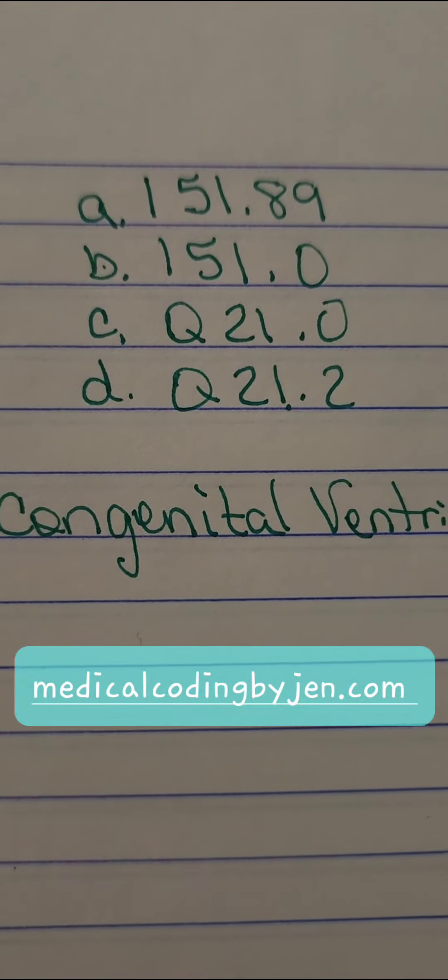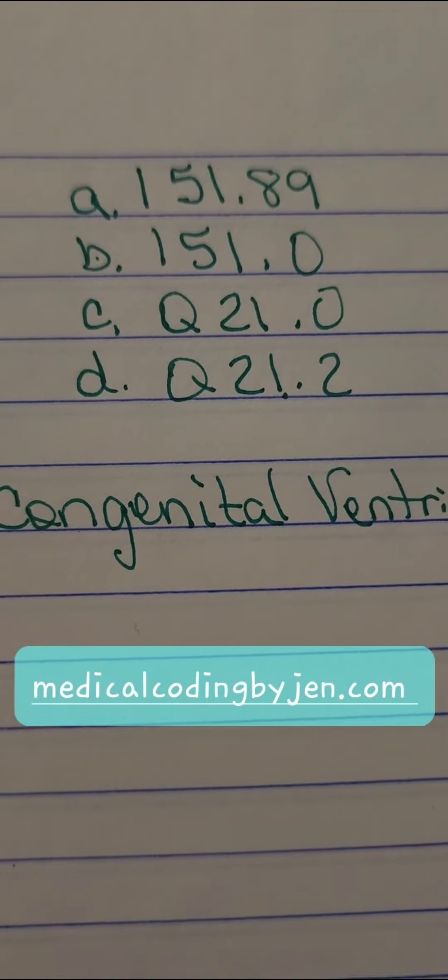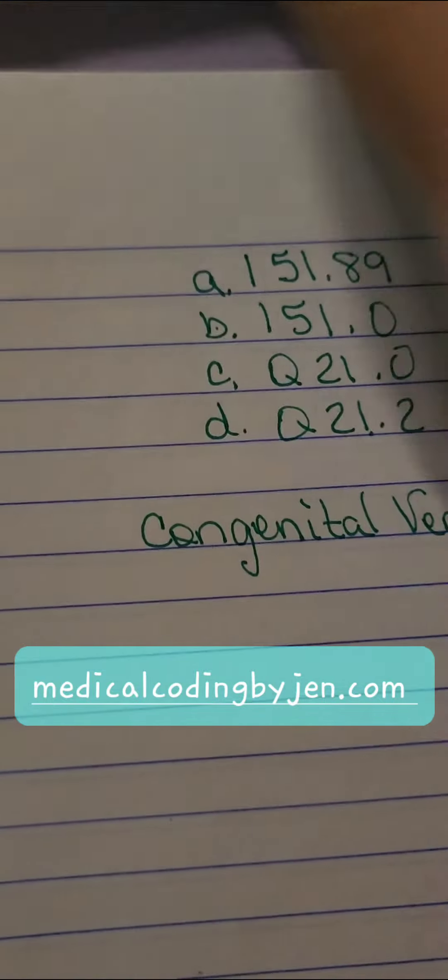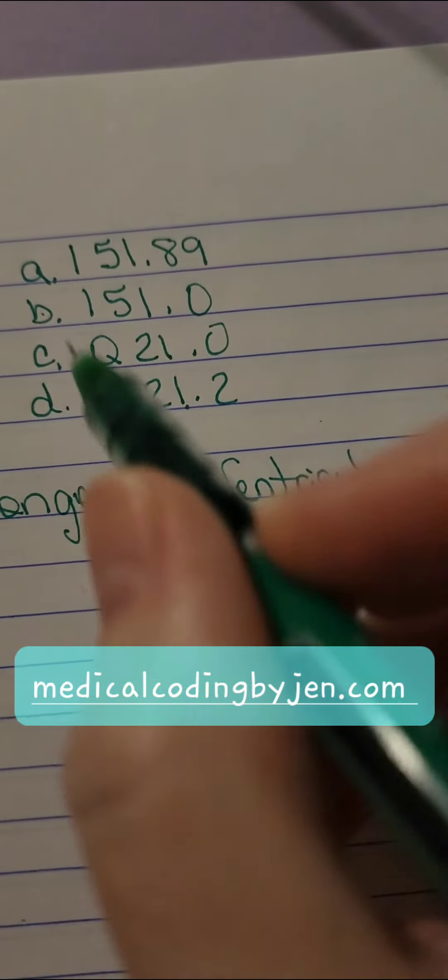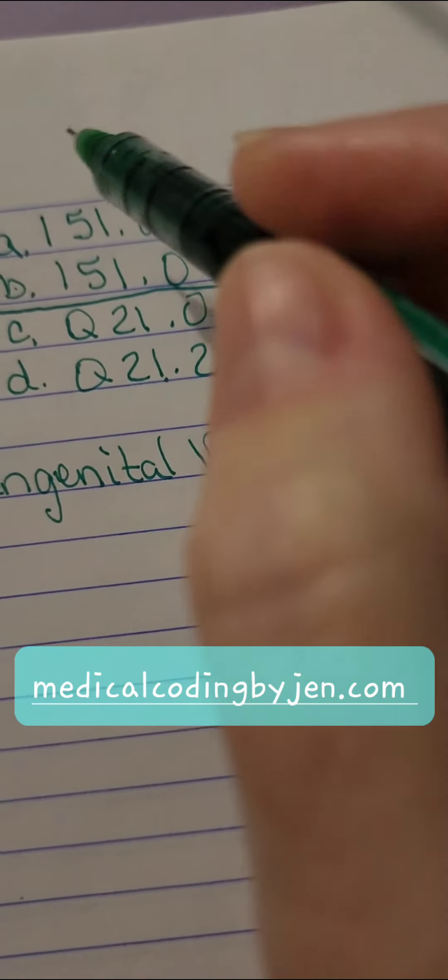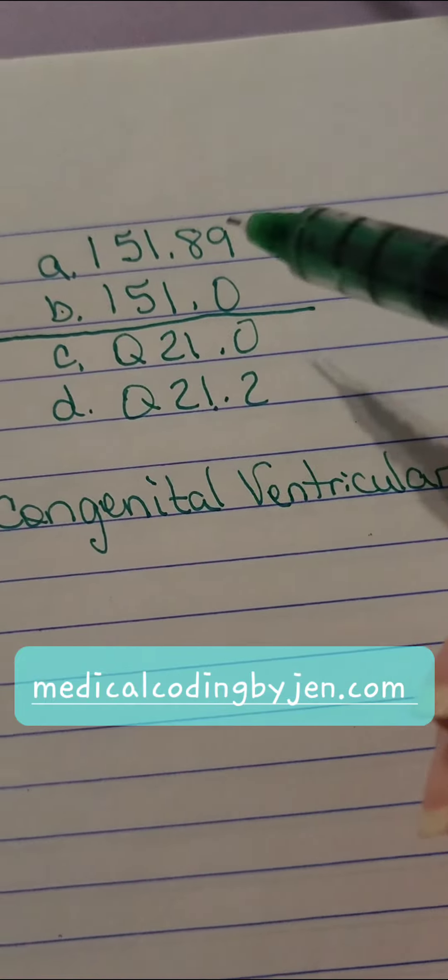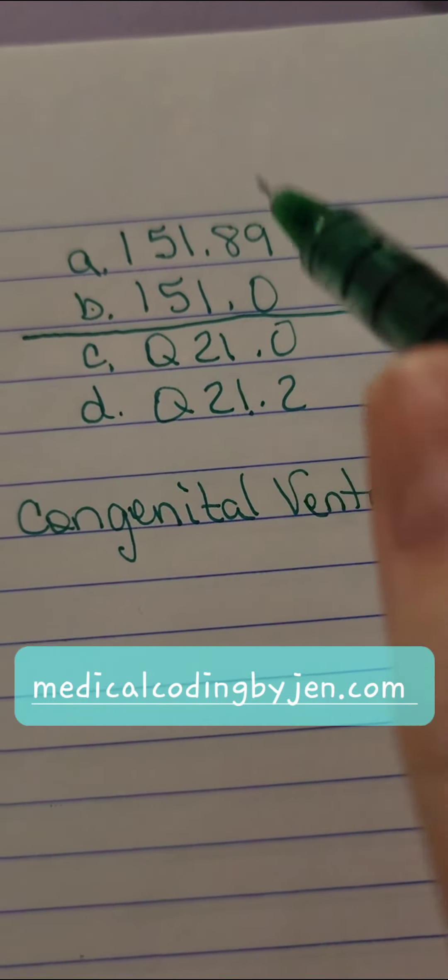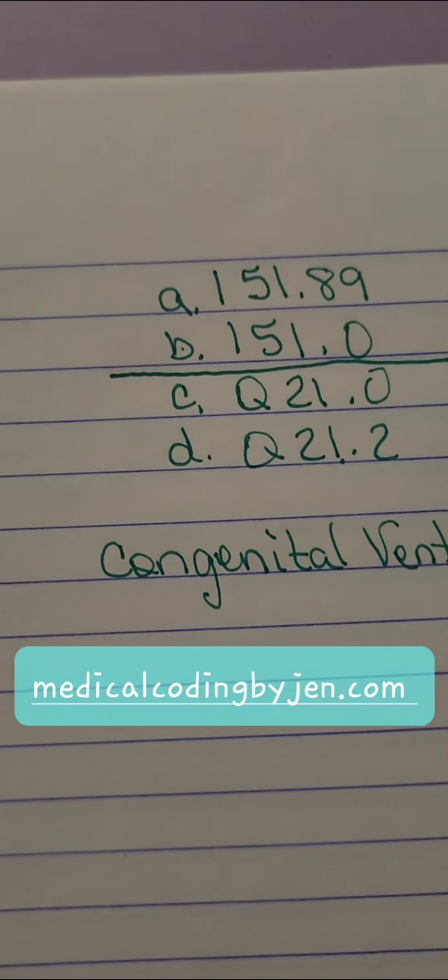How do you do ICD-10 questions so fast? Well, the first thing I do is look at the answers just as numbers numerically. So we're just going to look at these and I see that we have two that are in one section of the ICD-10 book and two that are in the other section.